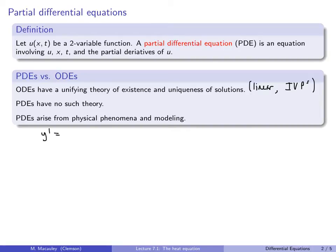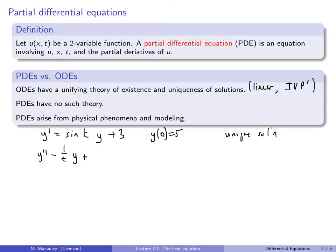For example, if we have a first-order ODE like y′ = sin(t)·y + 3, something like this, then this has a one-parameter family of solutions. And if we further specify that y(0) = 5, then we have a unique solution. If we have a second-order equation like y″ − (1/t)y + e^t · y = 4, then this is going to have a two-parameter family of solutions involving c₁ and c₂. Now if we specify initial conditions — the initial position and initial rate of change or velocity — now we have a unique solution.